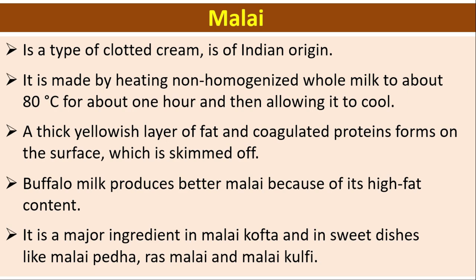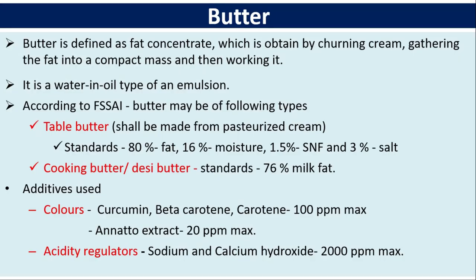Butter is defined as a fat concentrate obtained by churning cream, gathering the fat into a compact mass, and then working it. It is a water-in-oil type emulsion. According to FSSAI, table butter shall be made from pasteurized cream and contains 80% fat, 16% moisture, 1.5% SNF, and 3% salt.